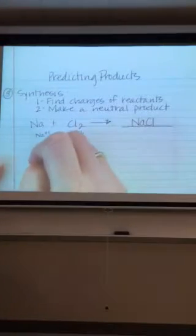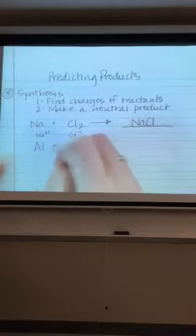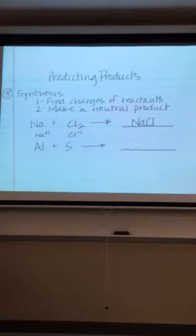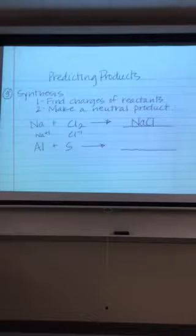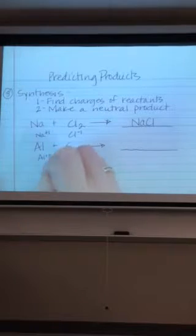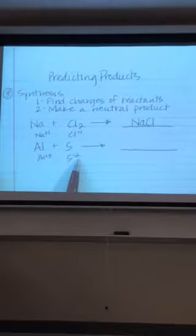What if I give you, let's do another one. What if I give you aluminum plus sulfur? What is that going to make? So step one, find the charges of the reactants. Aluminum is plus three. And what's sulfur? Negative 2. So do plus 3 and minus 2, do they total zero? No. So what is my least common multiple there? Six.